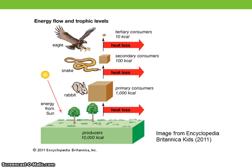Food webs are highly interwoven, with linkages representing a wide variety of species interactions. Some important basic terminology is associated with food web structure. Links are the arrows from one species to another and indicate the consumed and the consumer.